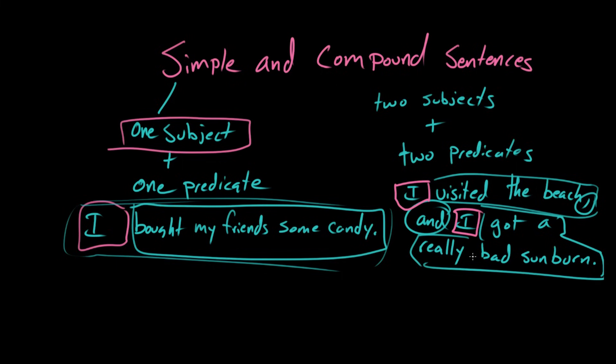So, the subject in both these cases is I, right? But it's sort of separate. It's like I am doing two different actions. Correct. Right? But what's important is like even if it's the same subject, if it's I both times, well, I don't know how to say this, but just like if it were like I visited the beach and got a really bad sunburn. Then it would be a simple sentence. Then it's simple.